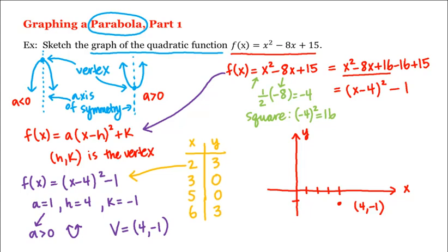So let's plot these points. So this is 1, 2, 3, so (2, 3) will be here. So this is 1, 2, 3 will be here. (3, 0) will be here. (5, 0) will be here. And (6, 3) will be here. And our parabola will look like this.